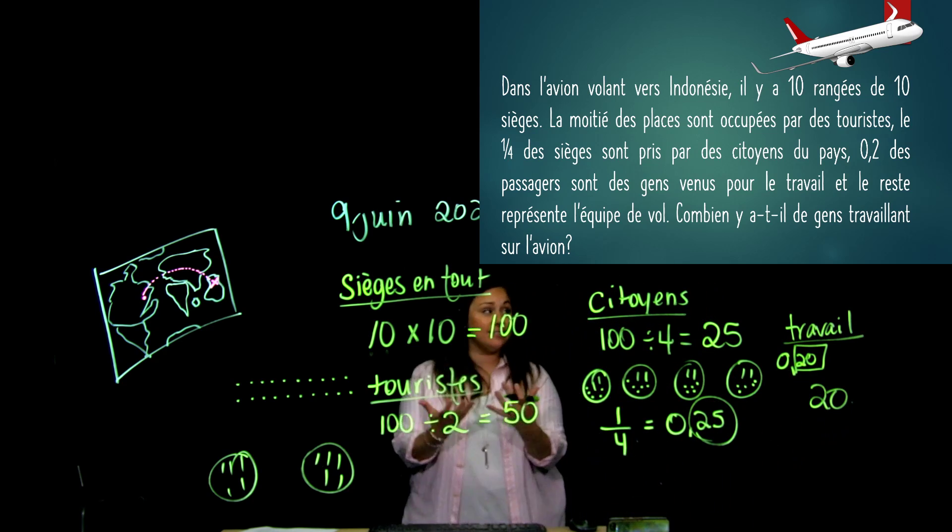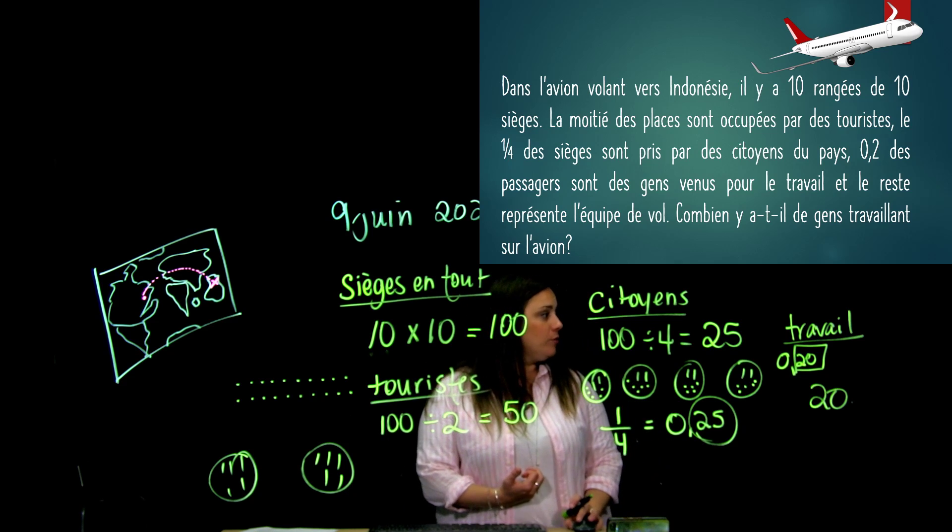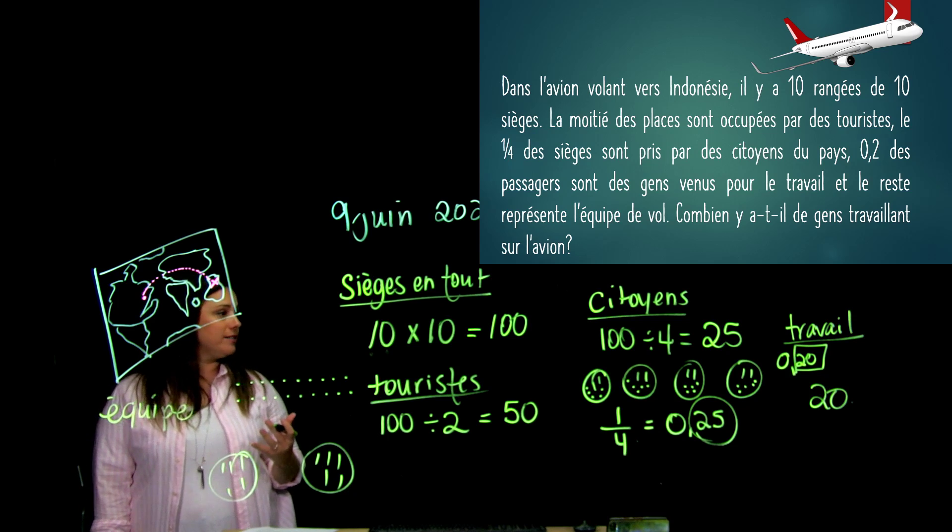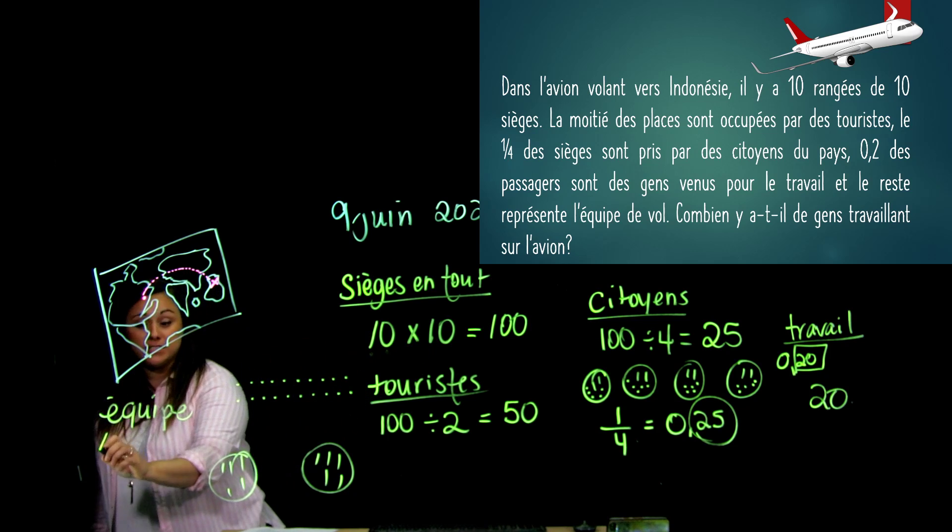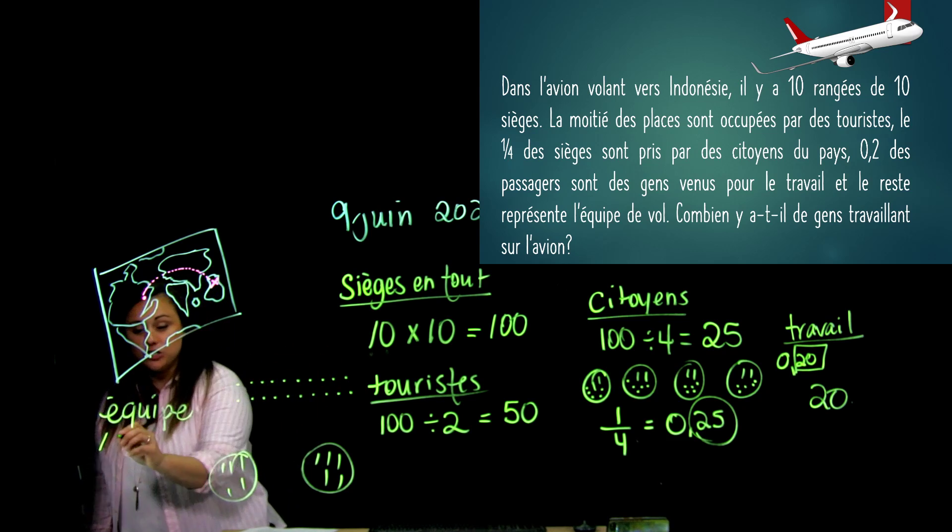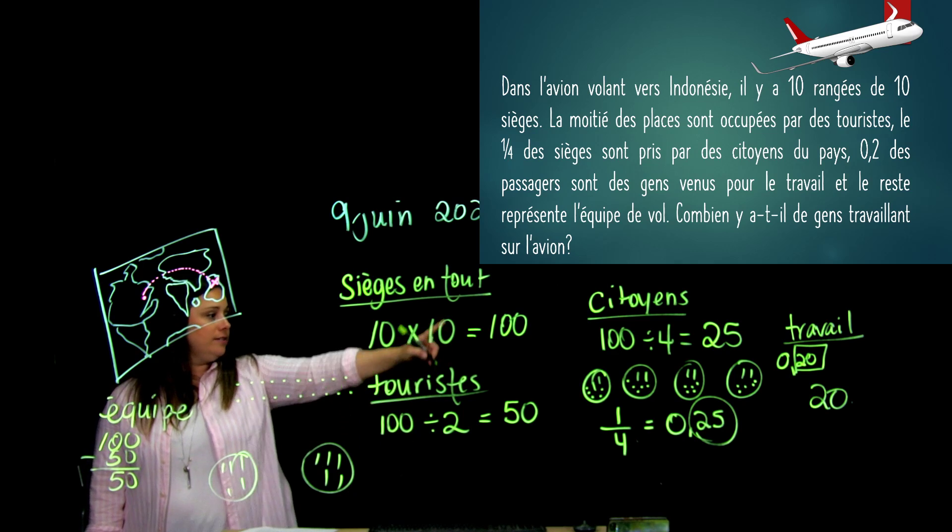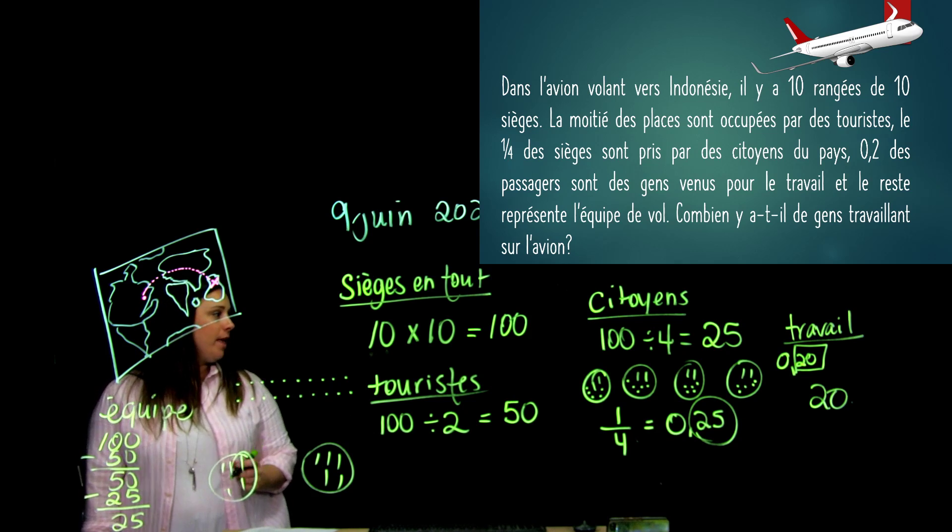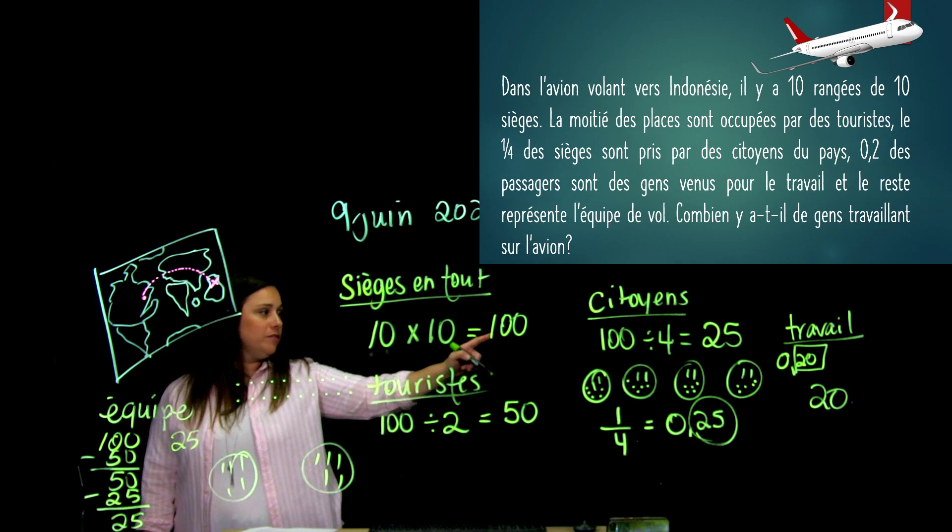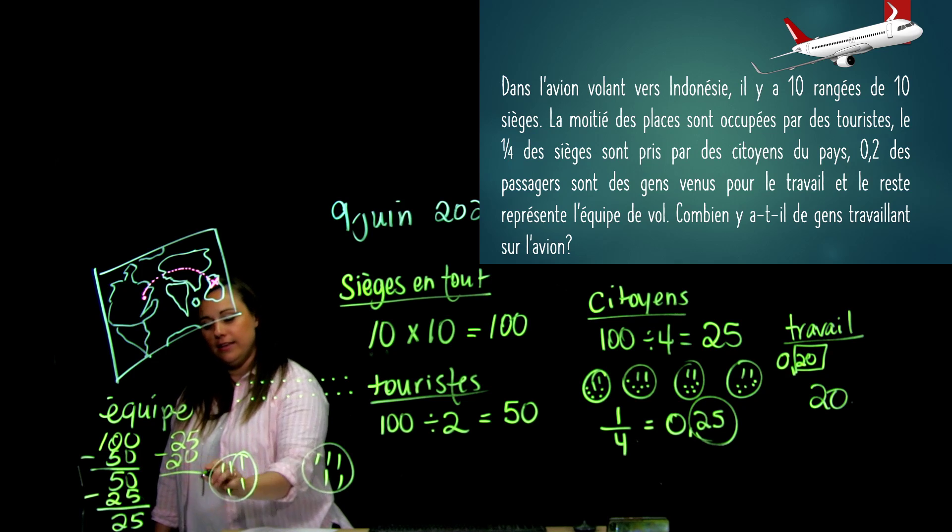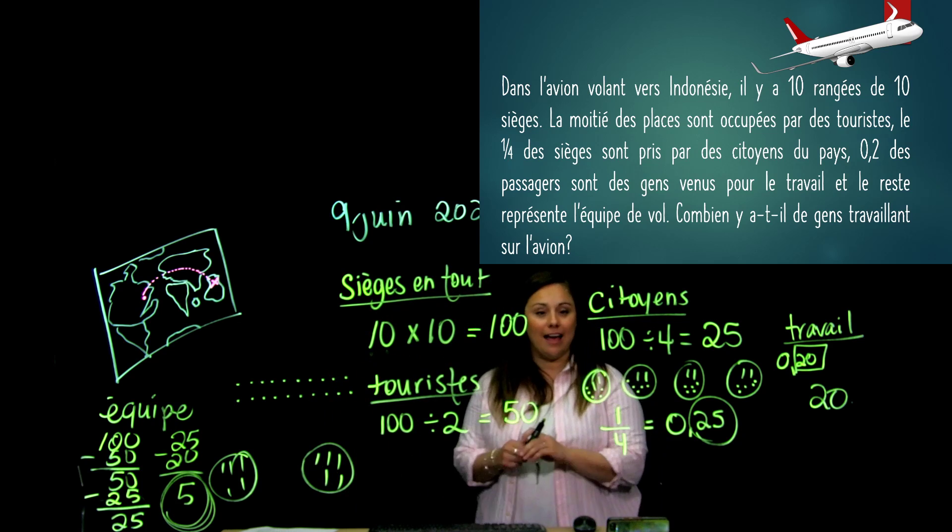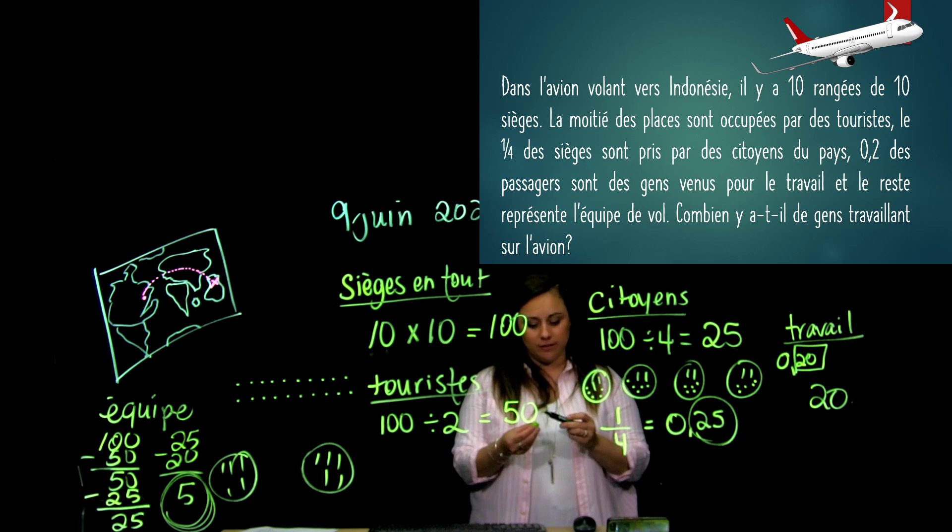Et là, il me faut que je calcule le reste. Alors, c'est l'équipe de vol. Il faut donc que j'additionne tout pour vérifier, dans le fond, qu'est-ce qu'il me reste. Alors, j'avais 100 sièges en tout. Et je soustrais à chaque fois ce que je trouve. J'en avais 100 moins 50. Ça me donne 50. Ensuite, j'enlève aussi 25. Moins 25. Ça me fait 25. Et là, je continue, j'en avais 25. Et j'en soustrais 20 qui viennent pour le travail. Il m'en reste donc 5. Donc, j'ai 5 personnes qui travaillent sur l'avion comme agent de bord, comme pilote.